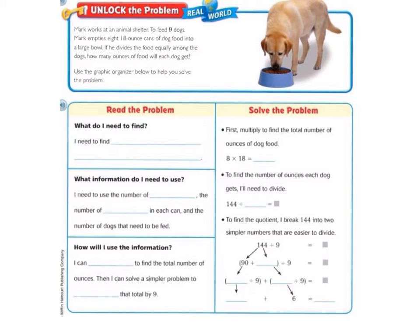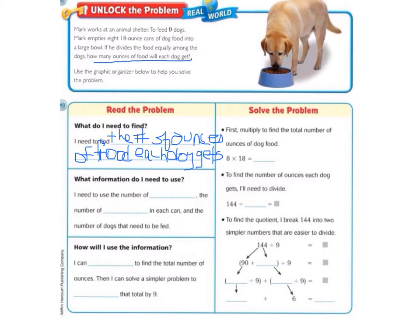So let's first look at the graphic organizer. The first step says read the problem, which we just did, and it says what do I need to find? So if we look back at the problem, it says we need to find the number of ounces of dog food that each dog gets.